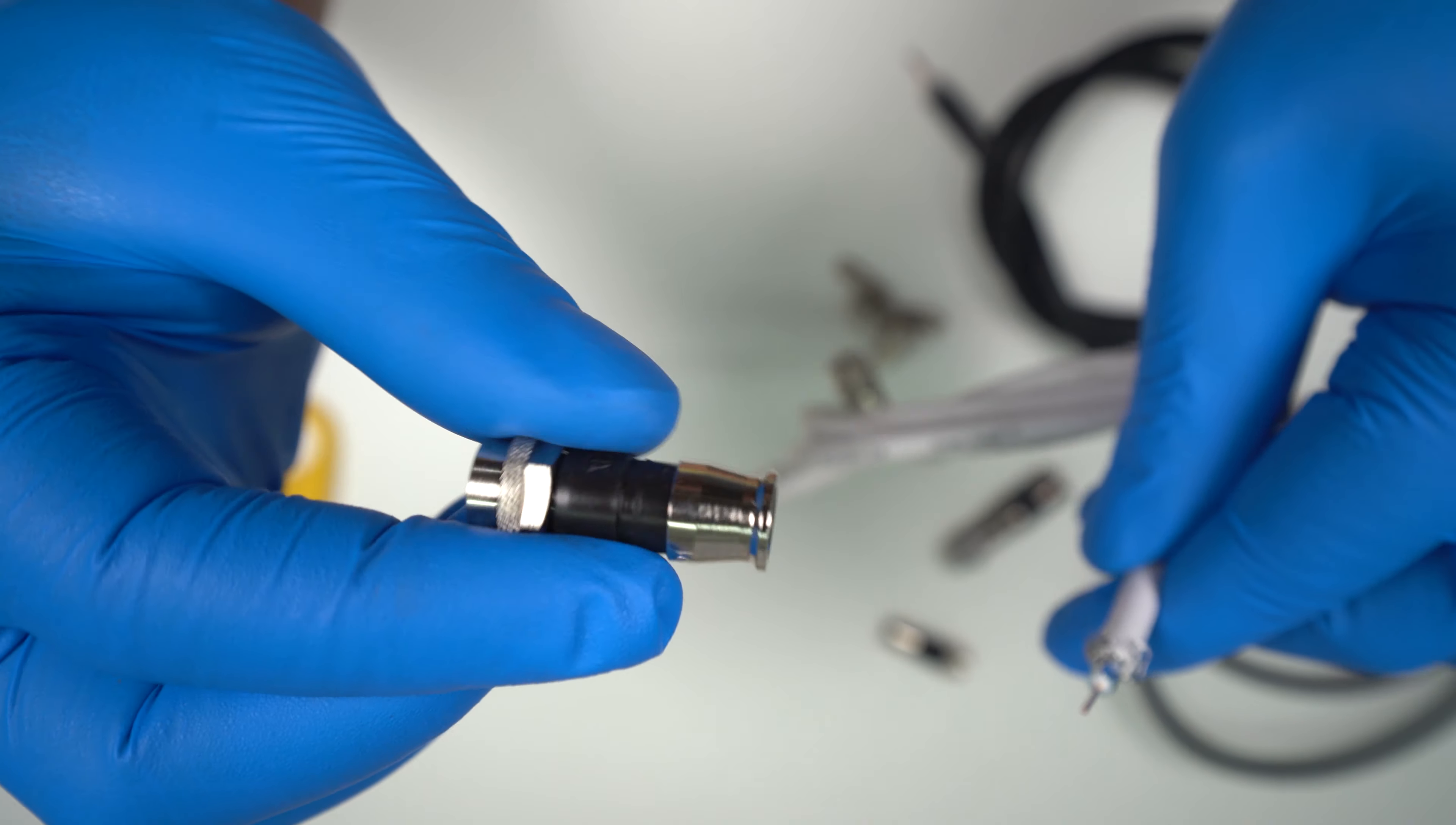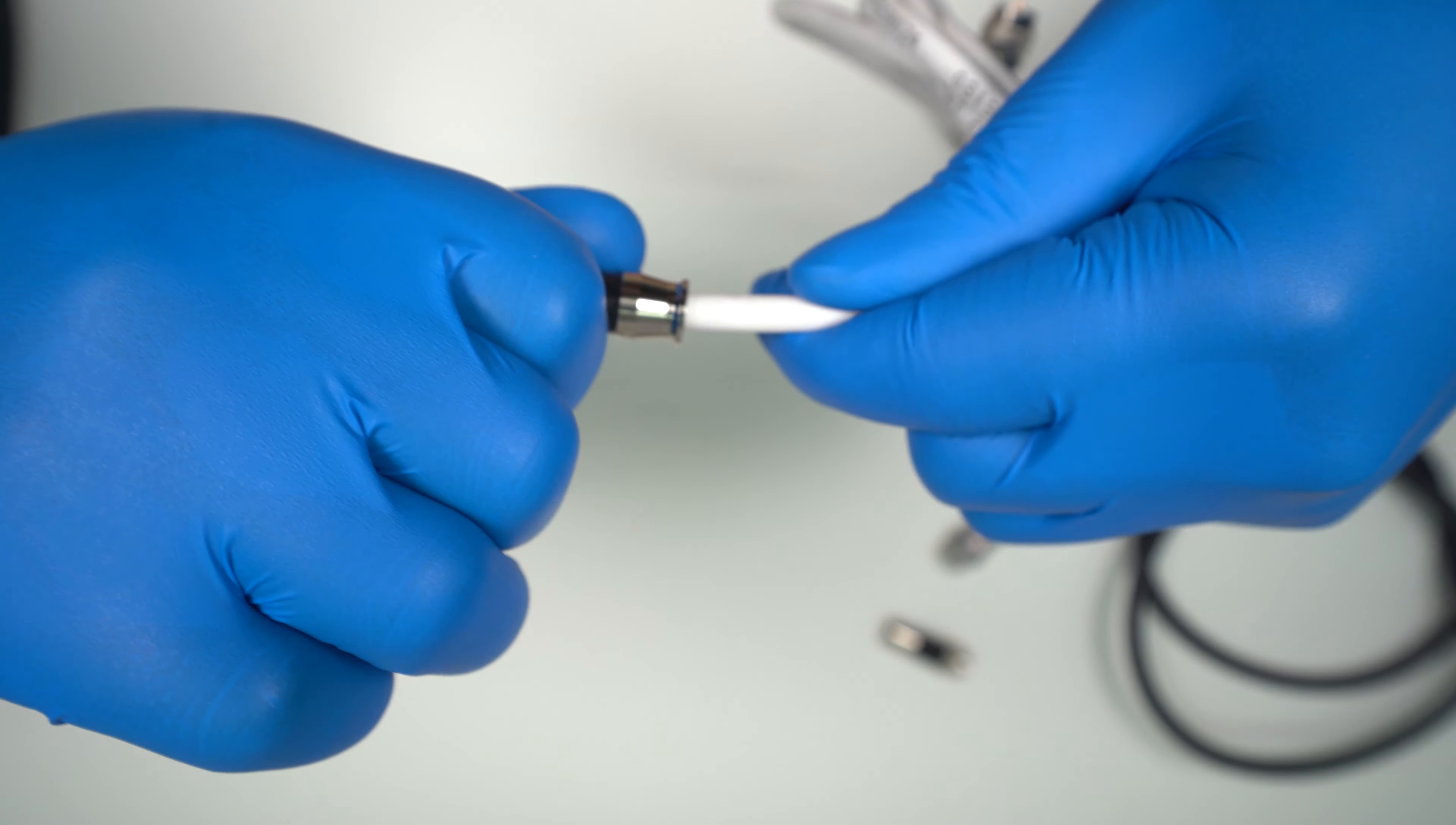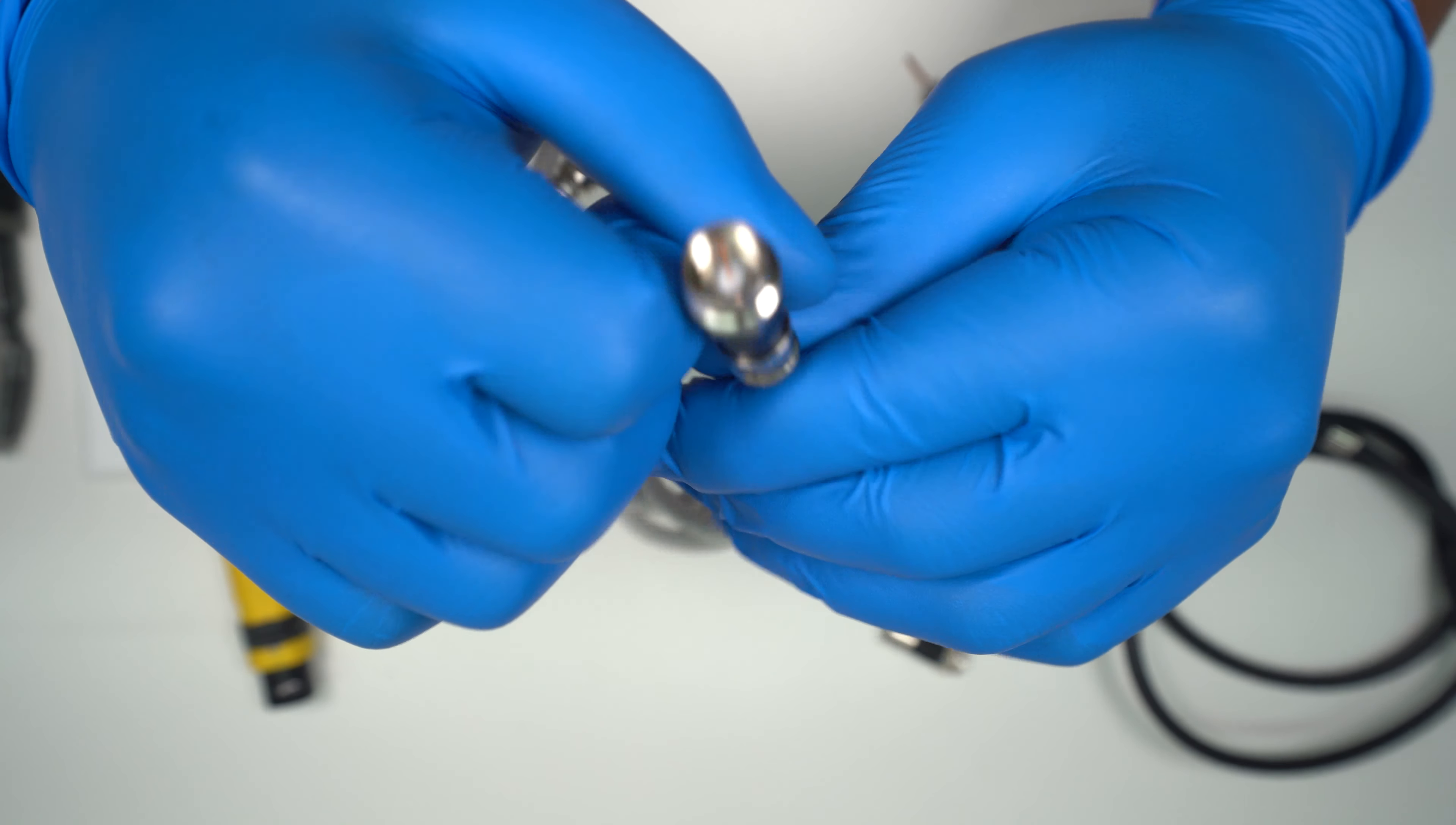So you just want to grab your connector and just insert it. And then the twist method usually works, especially for these older cables. And just do it enough until it's seated. And of course you'll just want to make it flush. Then you just grab your handy crimper and we're just going to squeeze on the crimper to apply pressure so that the connector gets seated properly.